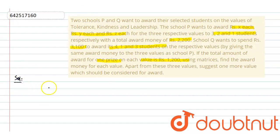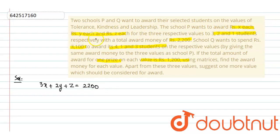Firstly, it is given in the question that 3x plus 2y plus z equals to 2200, because SchoolP wants to award Rs. x each, Rs. y each and Rs. z each for the three respective 3, 2 and 1 students. So, 3x plus 2y plus z equals to 2200. This is our first equation.